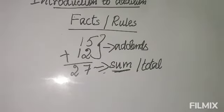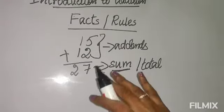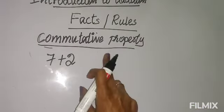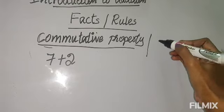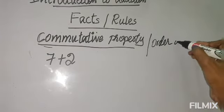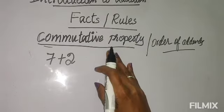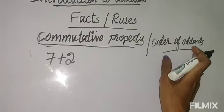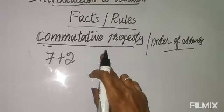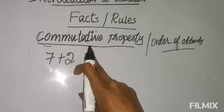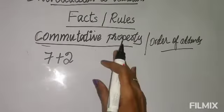You must know what addends and sum are, because we will be using these words when we state the facts. Now the first property is the commutative property. In your book it is also called 'order of addends,' but I prefer you to use the word 'commutative property' because in higher classes this is the word that is used. Both names mean the same thing.